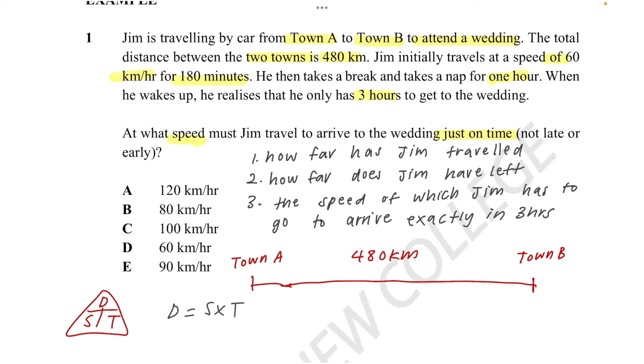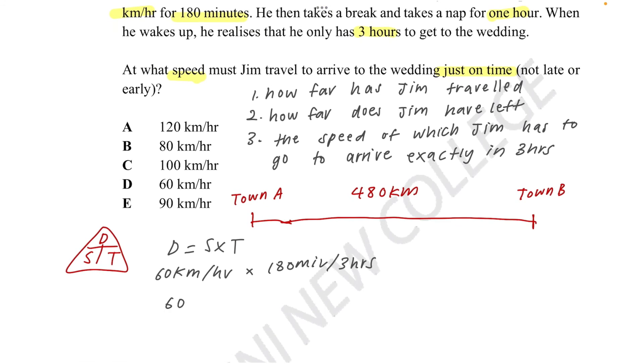So if we know that we're going 60 kilometers per hour at 180 minutes, firstly we need to convert the minutes into hours. We know that 60 minutes in an hour, so it should be about three hours. So if it's going at 60 kilometers at 3 hours, then using a simple 60 times 3, that's 180. He has already traveled 180 kilometers. So around maybe here. He has 480 minus 180 left, so that's 300 kilometers left.